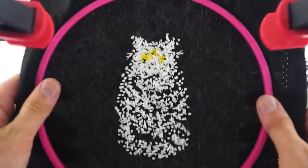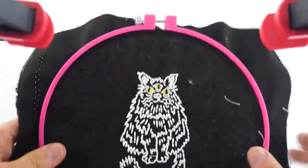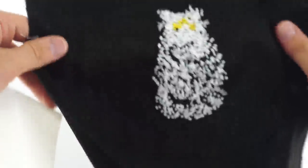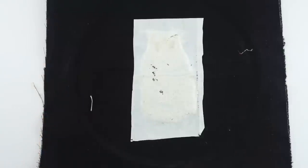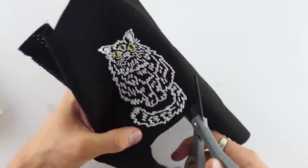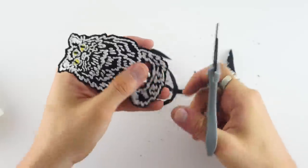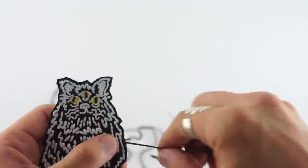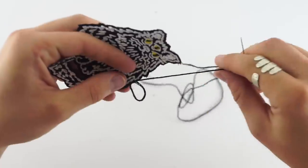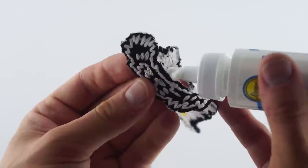Then I went ahead and did the same steps I did on the last one: ironed the iron-on adhesive, cut it out, left one-eighth of an inch, and started to make the border.